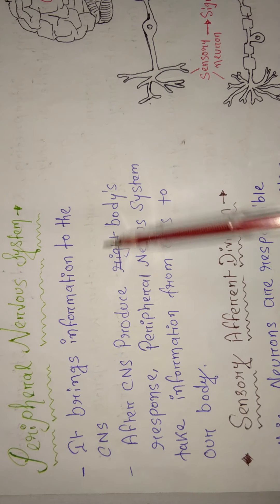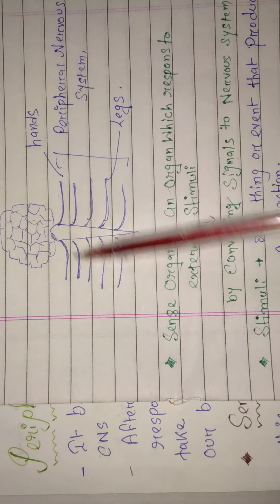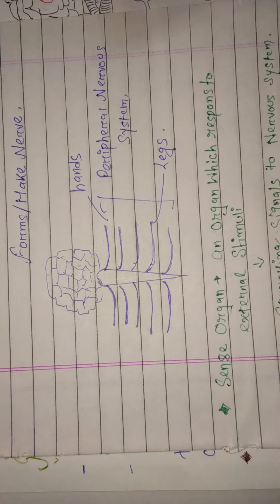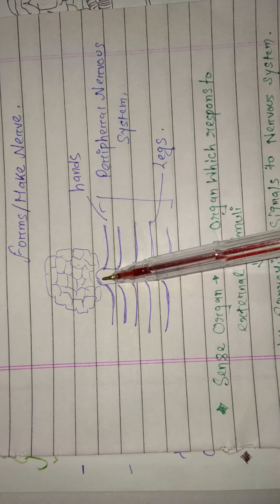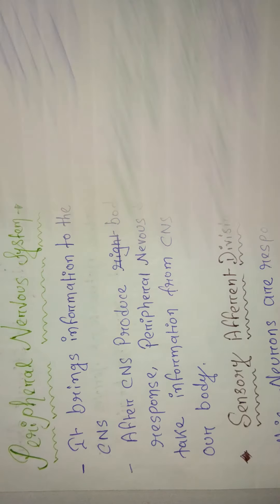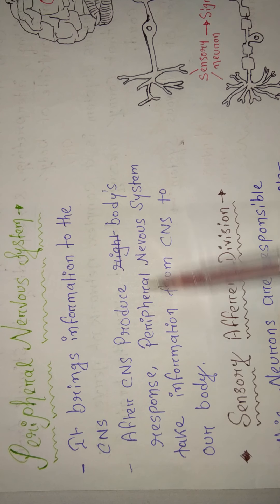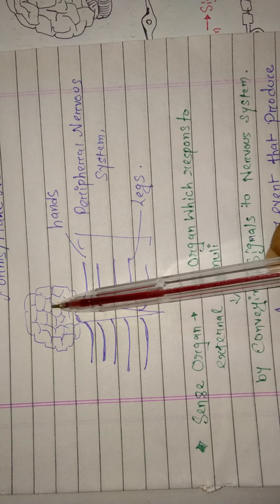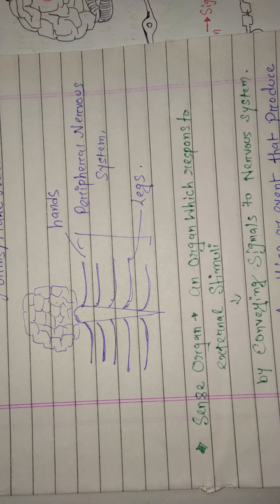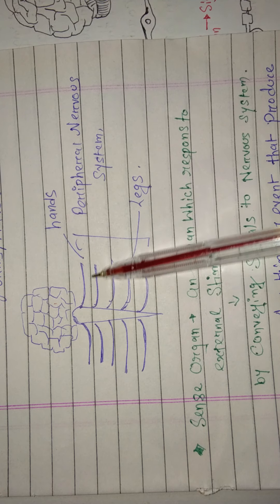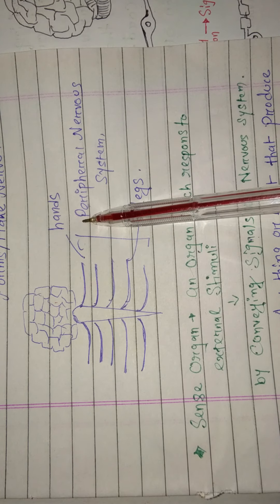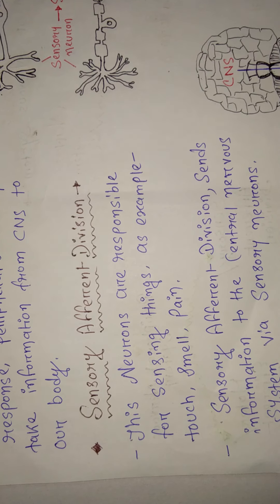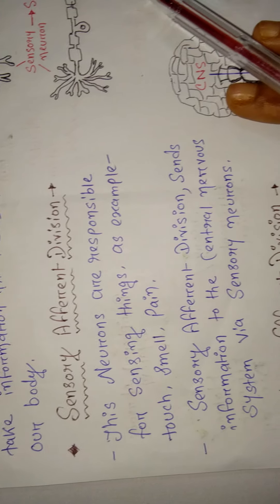Now let's understand the peripheral nervous system. It brings information from the body to the central nervous system. After the CNS produces a response, the peripheral nervous system then takes that response from the CNS back to the body. The peripheral nervous system is divided into two parts: the sensory afferent division and the motor division.